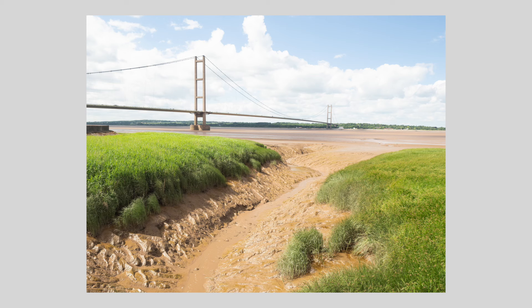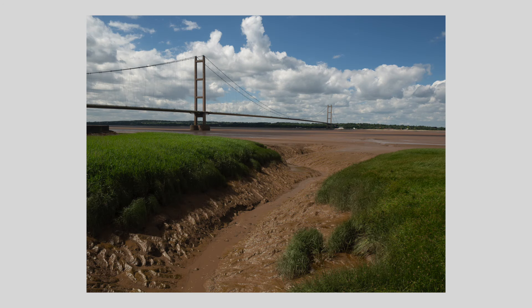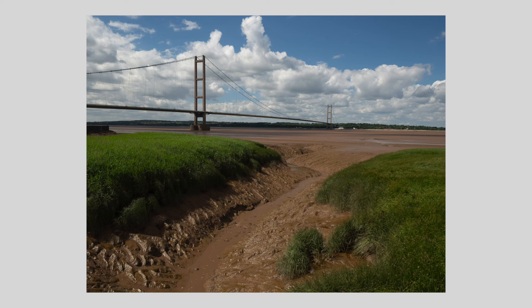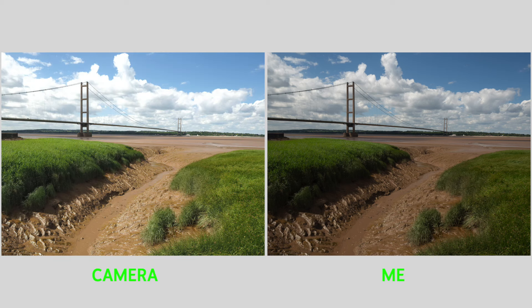I took another photograph and this time I overexposed a RAW file on purpose at base ISO by one stop, then lowered the exposure by one stop in Lightroom. I wanted to see the difference between me manually editing the RAW file versus the camera editing its own RAW file and outputting a JPEG. What I found was that my own overexposing and reducing the exposure gave a slightly better result than the camera did on its own.